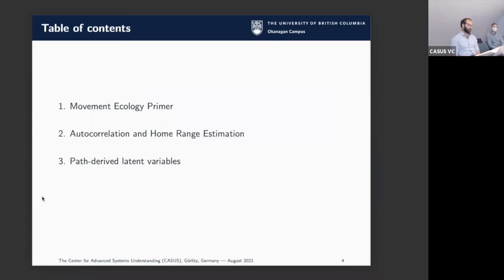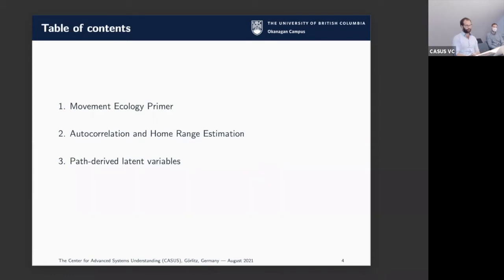Today I'm going to talk primarily about some of the methods we've been developing for working with tracking data. In particular I'll focus on the problem of autocorrelation in these data and home range estimation. The second thing I'll talk about is path-derived latent variables and how to estimate them. I'll start with a brief primer on movement ecology for anyone not especially familiar with why people collect these data.